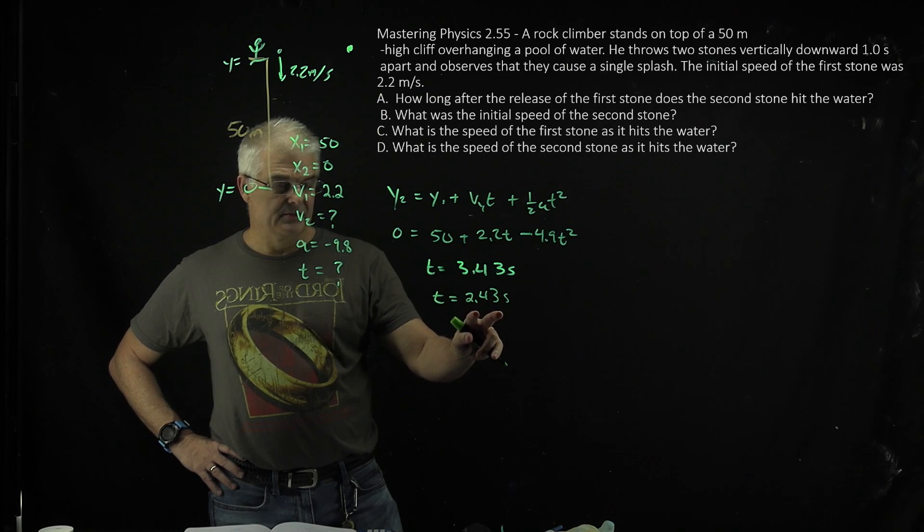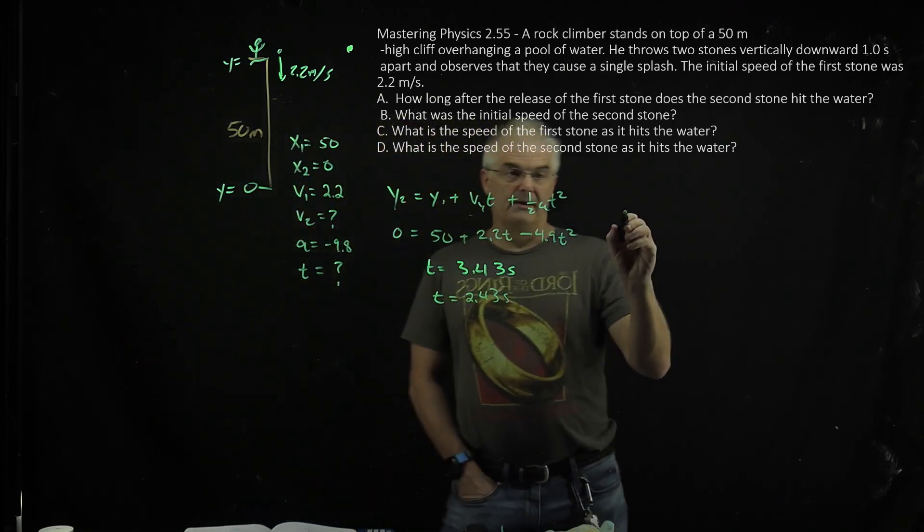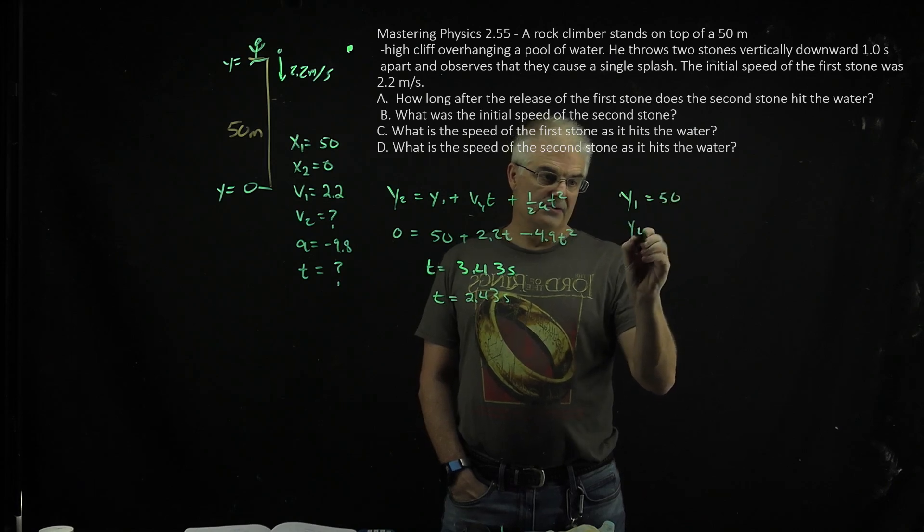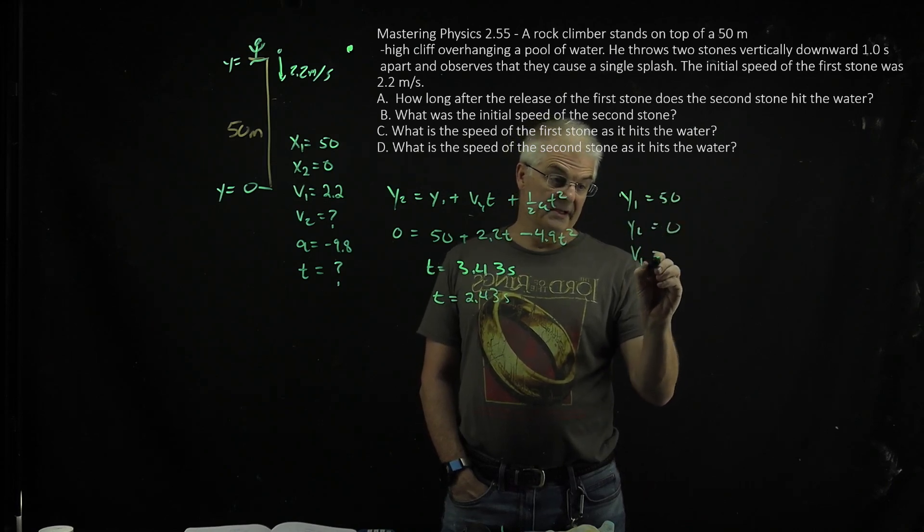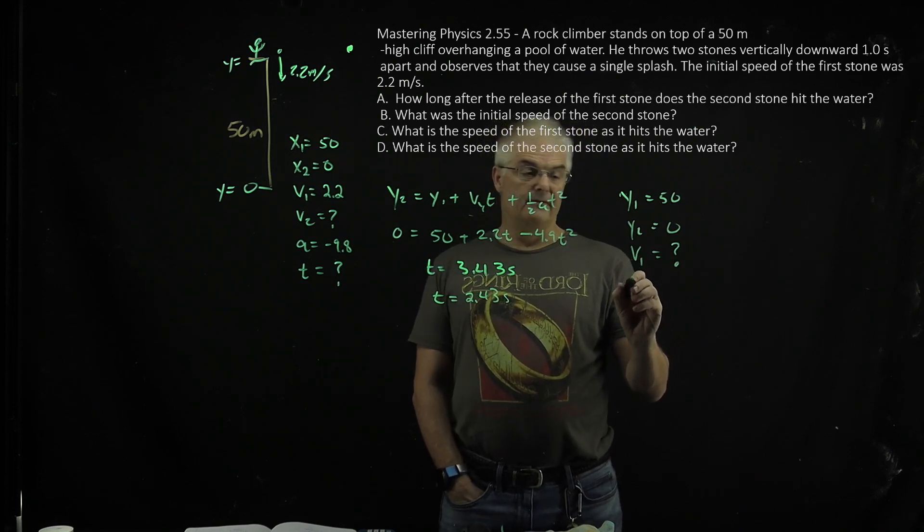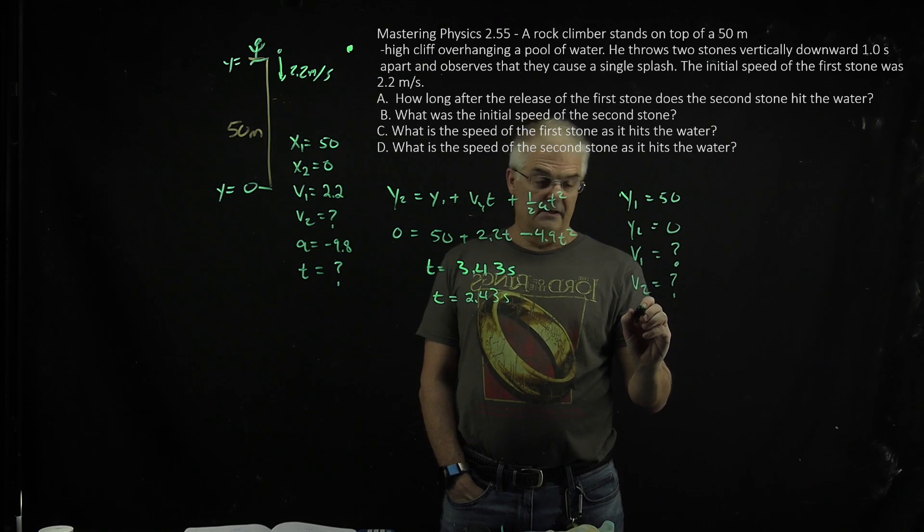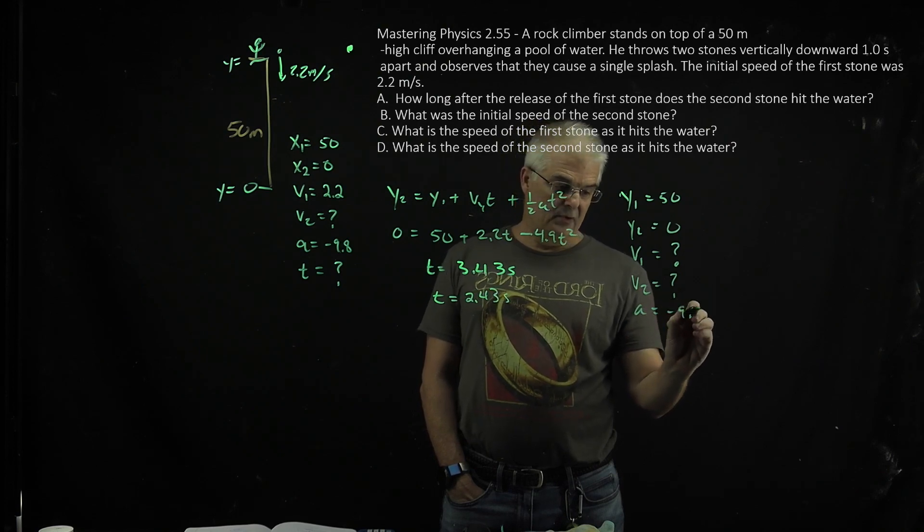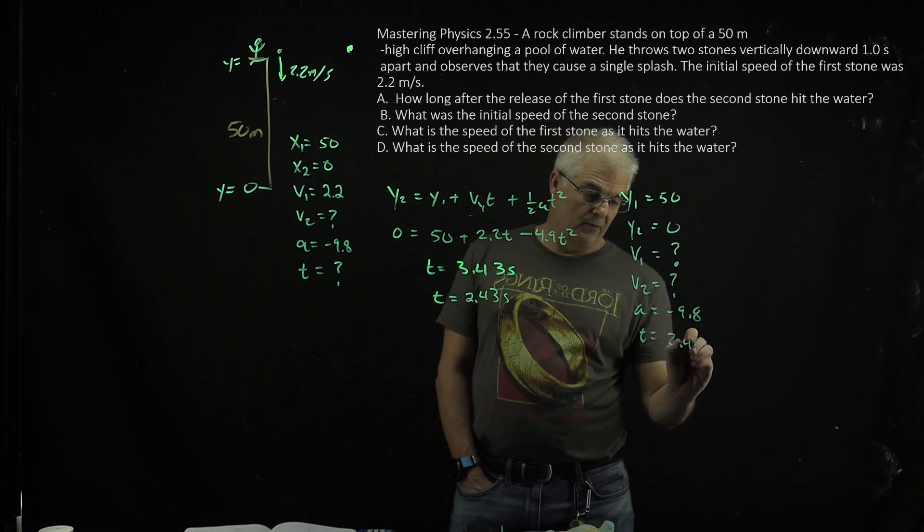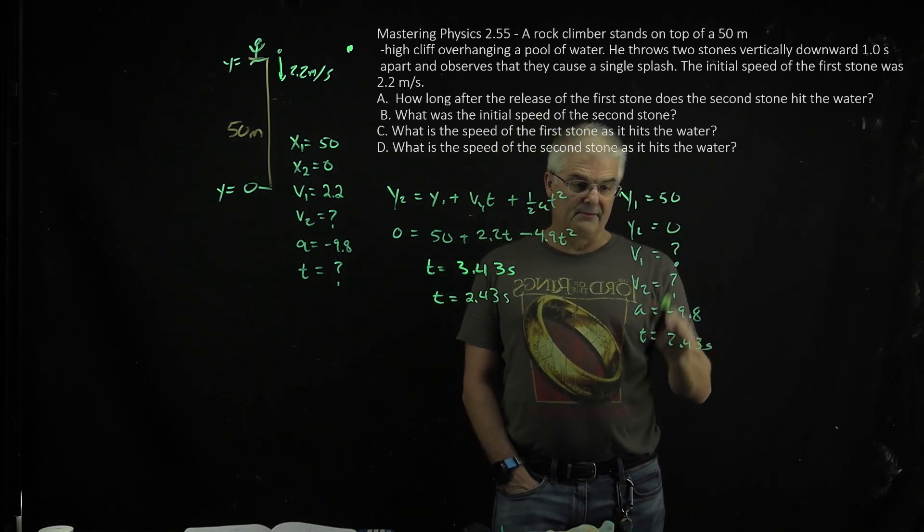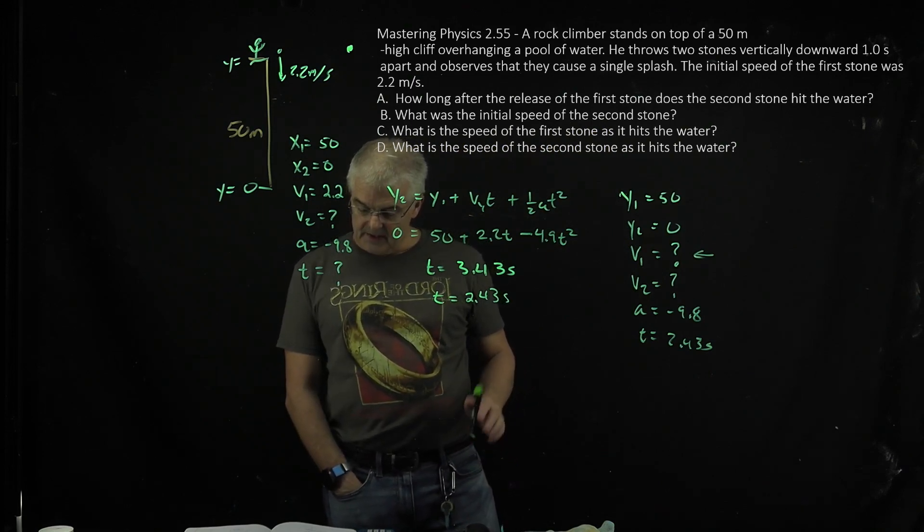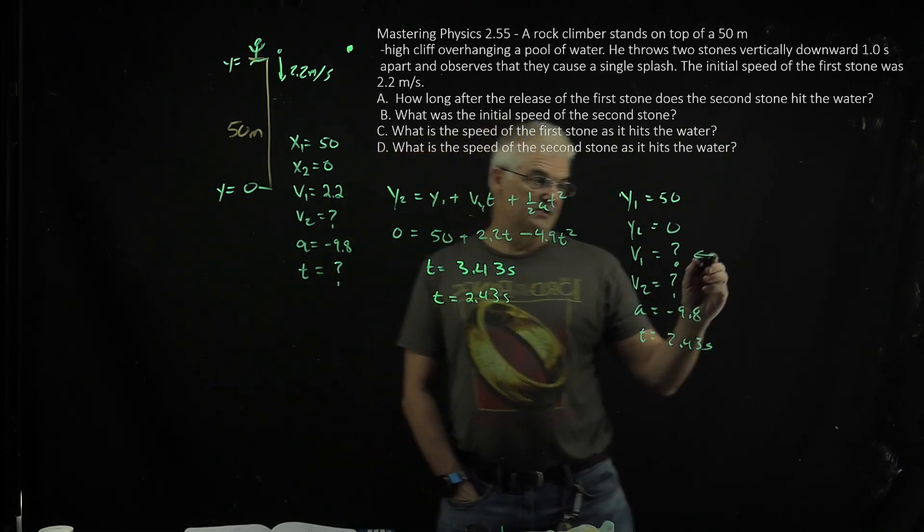So what I'm going to do is, in the sort of the second case, you know, y1 equals 50, y2 equals 0, v1 equals question mark, v2 equals question mark, a is negative 9.8, and t, though, is 2.43 seconds, because you have to travel. And we're now trying to solve for v1, and so it's a little bit of a different problem. We're still going to use the same equation.